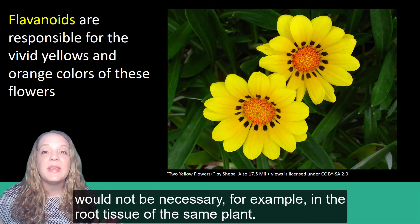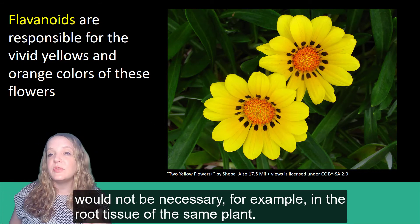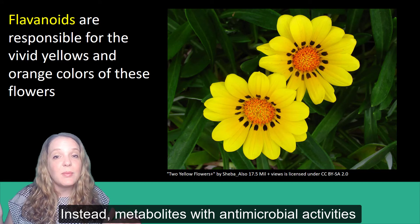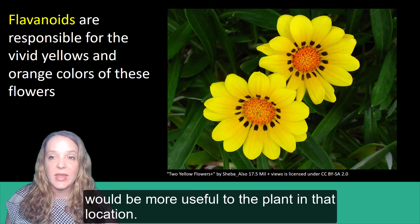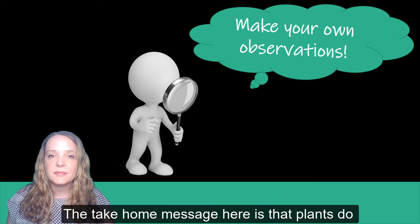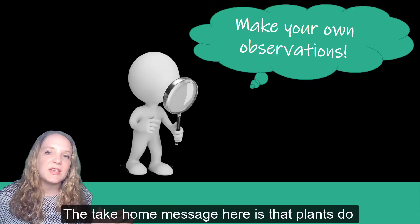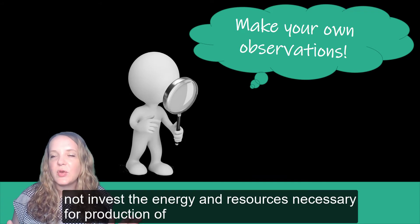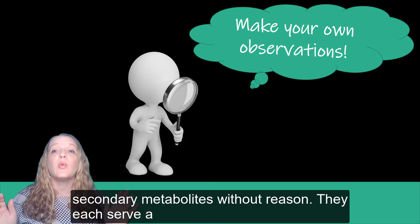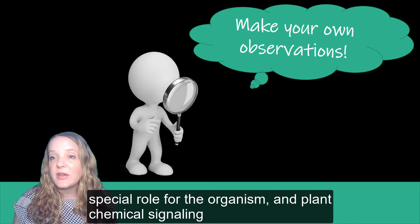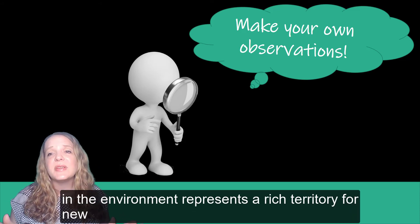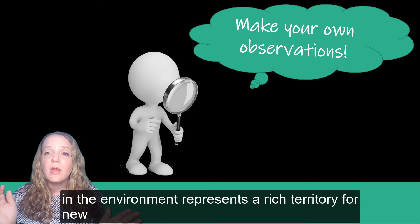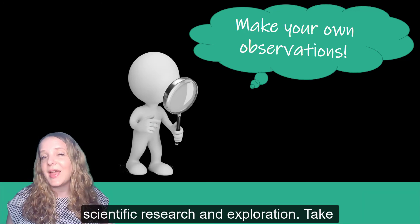Such a chemical makeup would not be necessary, for example, in the root tissue of the same plant. Instead, metabolites with antimicrobial activities would be more useful to the plant in that location. The take-home message here is that plants do not invest the energy and resources necessary for production of secondary metabolites without reason. They each serve a very special role for the organism. And plant chemical signaling in the environment represents a rich territory for new scientific research and exploration.